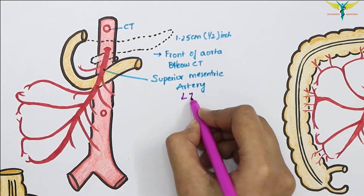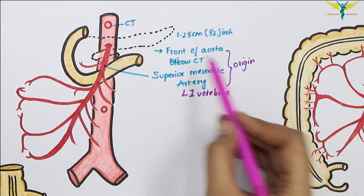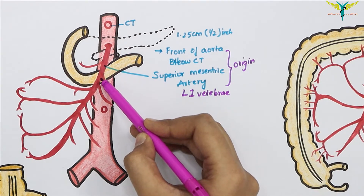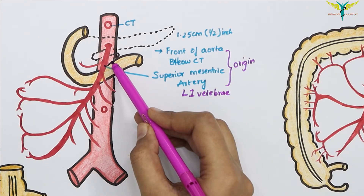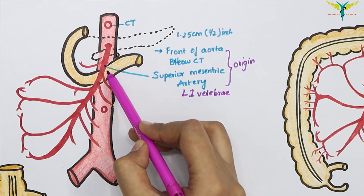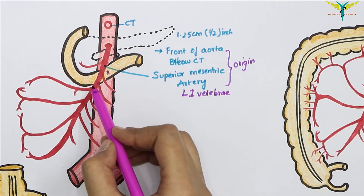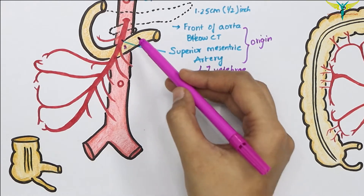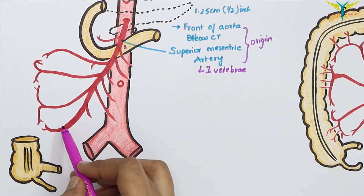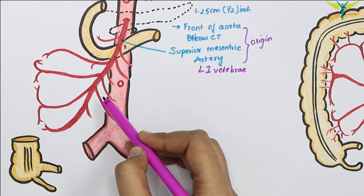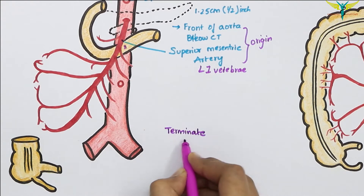The superior mesenteric artery originates at the L1 level. From its origin, it runs downwards and to the right, passing in front of the uncinate process of the pancreas and in front of the third part of the duodenum. It then enters the root of the mesentery, running between its two layers, and terminates in the right iliac fossa by anastomosing with a branch of the ileocolic artery. Throughout its course, the superior mesenteric artery is accompanied by the superior mesenteric vein on its right side.